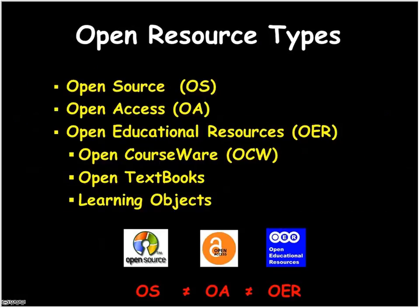Here are three categories of open resources. Open source, which is actually just software. Open access, which is a term that applies to publications, textbooks, journal articles, and journals. And then something called open education resources. Open education resources can include open courseware, open access texts, and learning objects. Open source, open access, and OER are not all the same — the licensing terms you might find with open source software are quite different than the kinds of licenses found with open access or open education resources.